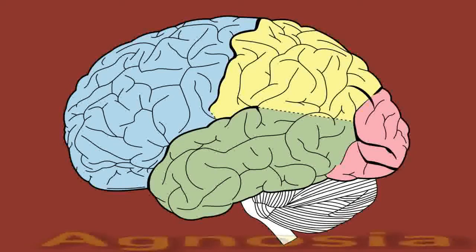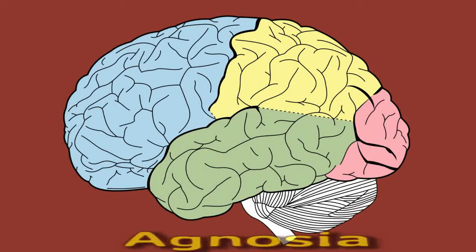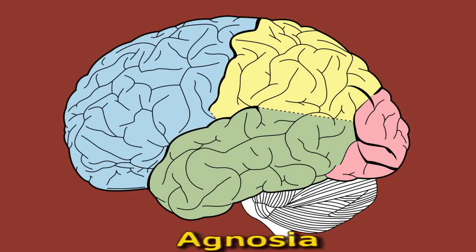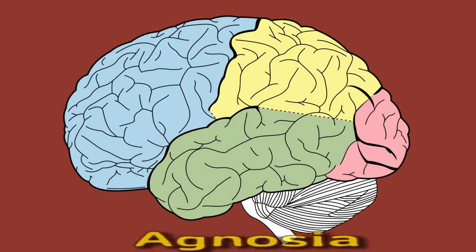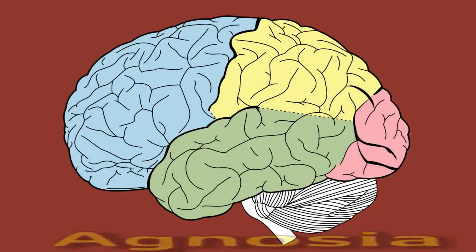Agnosia: Agnosia is a rare neurological disorder that occurs due to a stroke. People will be unable to retrieve information associated with visual memory from damaged areas of the brain. As a result, a person may have trouble recognizing familiar sights in their visual field, including common objects, familiar faces, and everyday sights that may not make sense.